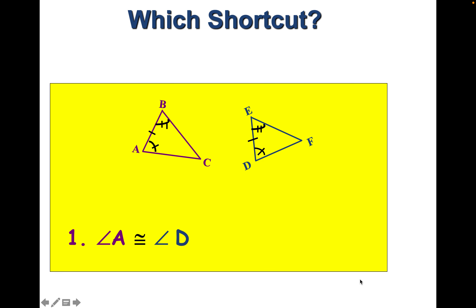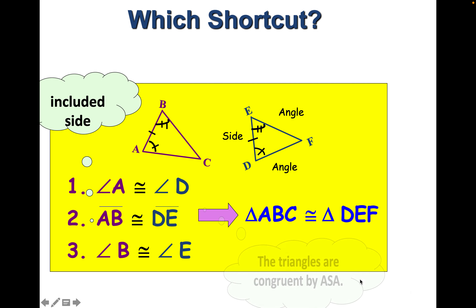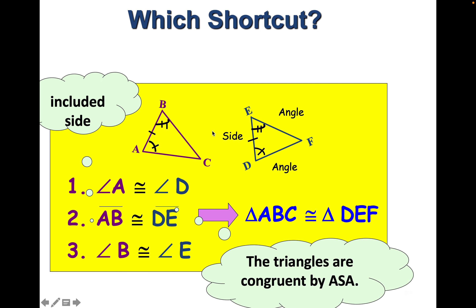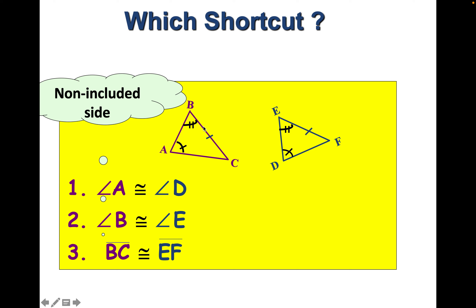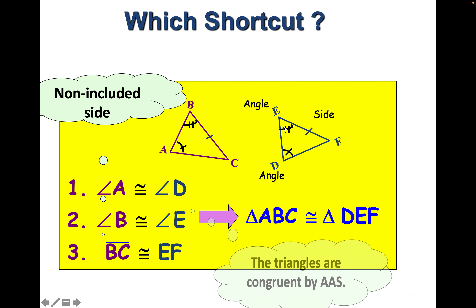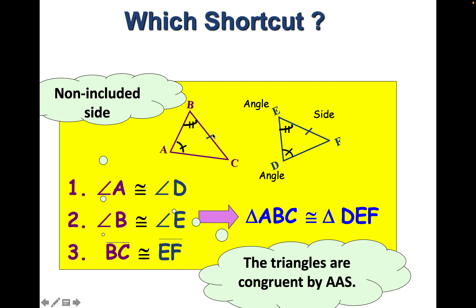For the next pair, we have angle, side, angle matching angle, side, angle — those triangles must be congruent by ASA. We list the things we know, then say 'therefore' the triangles are congruent and give the reason. For the last pair, we have an angle the same, then another angle, then a side — angle, angle, side matches angle, angle, side. They are congruent by AAS. List the things you know, make your conclusion, and say why.